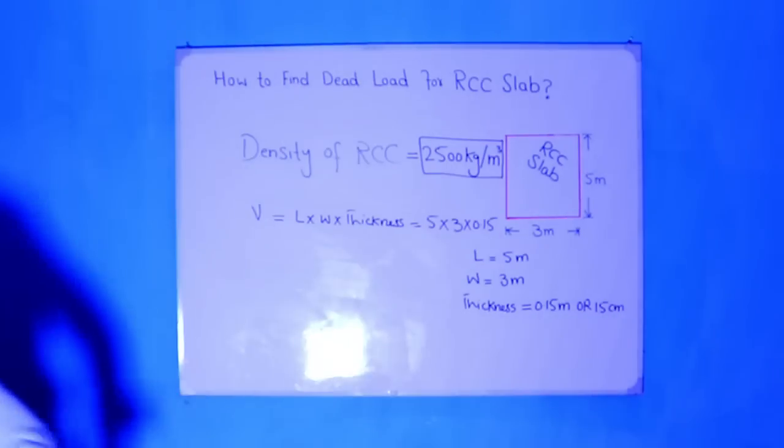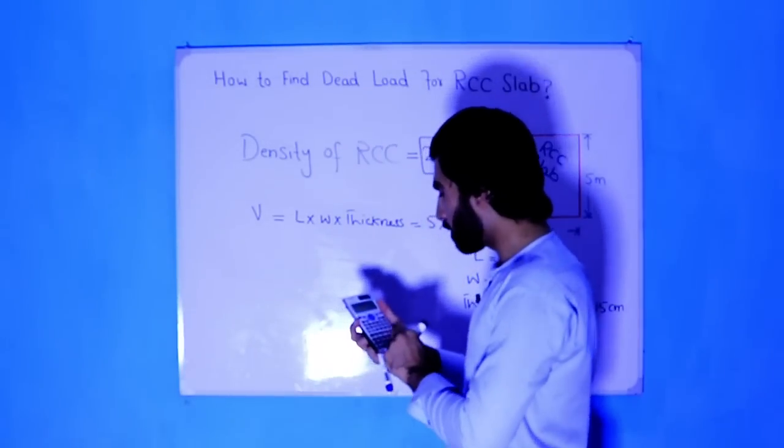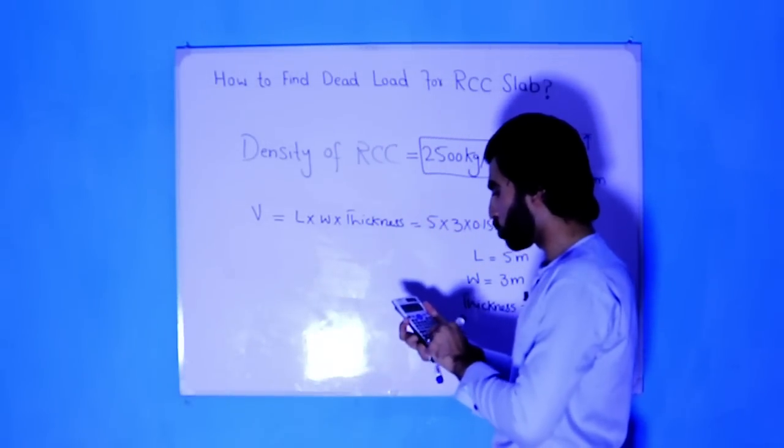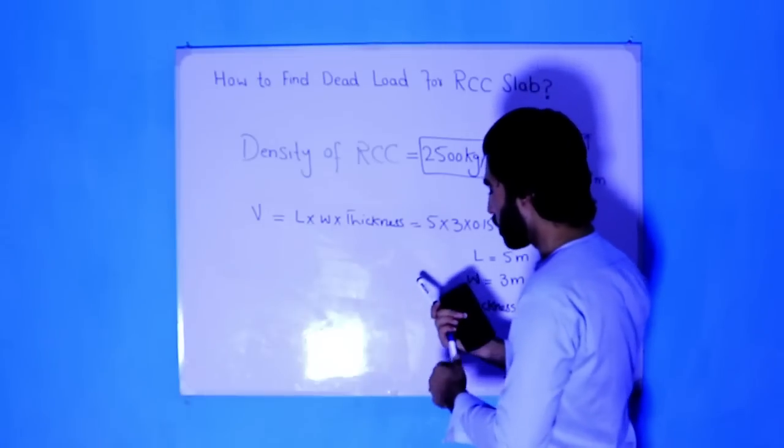Let me calculate this. 5 multiply 3 multiply 0.15, it becomes 2.25. So volume becomes 2.25 cubic meter.